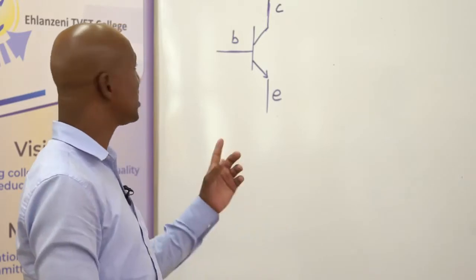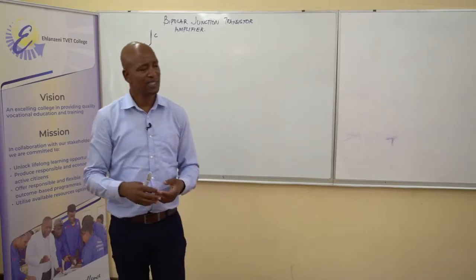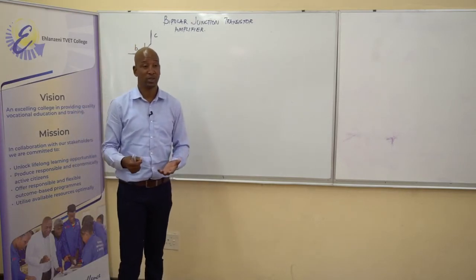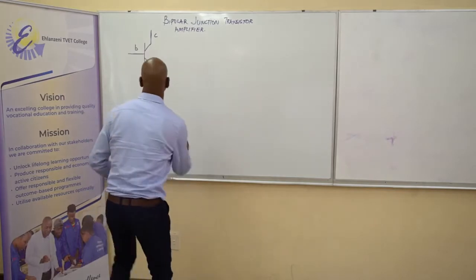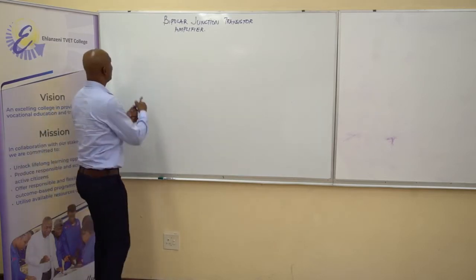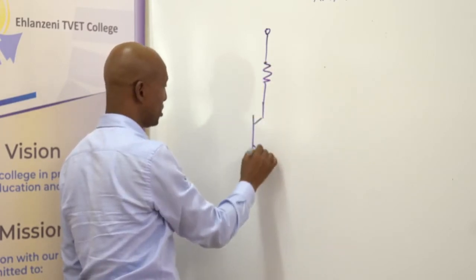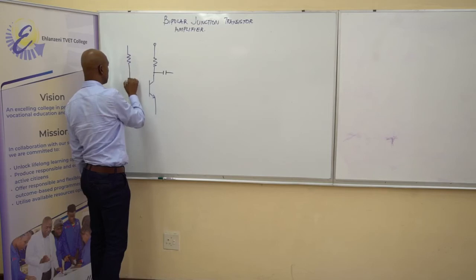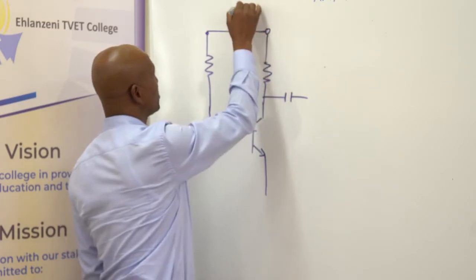Naturally, a BJT or bipolar junction transistor is a current amplifier, but some transistor circuits are designed for voltage and power amplification. How does an amplifier look like? An amplifier — let me draw an amplifier circuit. It's a circuit which loosely looks like this. Once you have all these components surrounding this transistor, we can now say we have an amplifier.